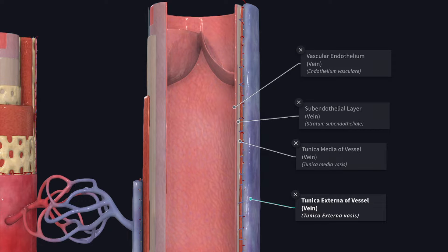In arteries the tunica media is usually thicker than the adventitia. In contrast, the adventitia of the vein is thicker than the media, especially in the large vein.